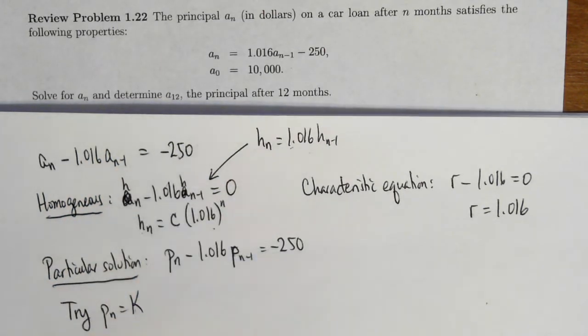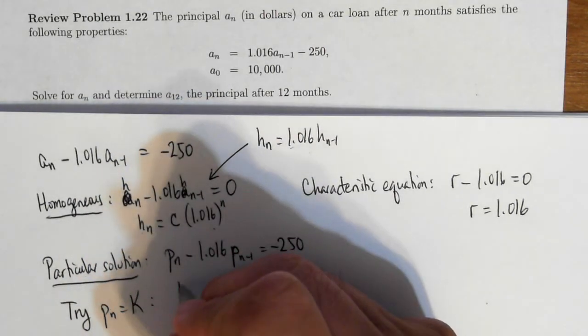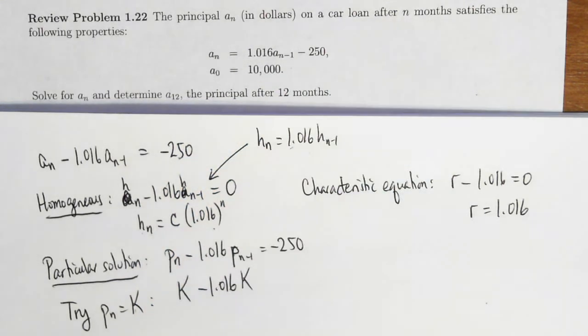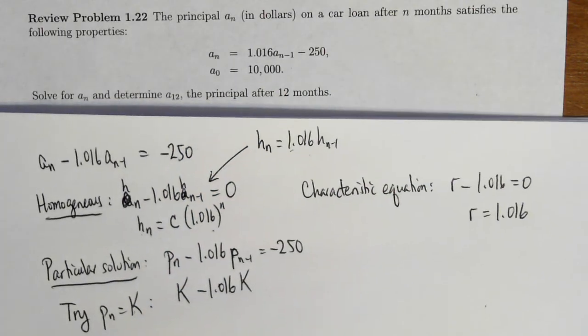And I'll use the letter k because I've already used the letter c up here. So p_n is a constant. And also this thing will also be the same constant. It does not depend on n.